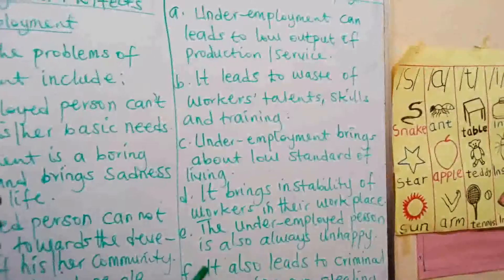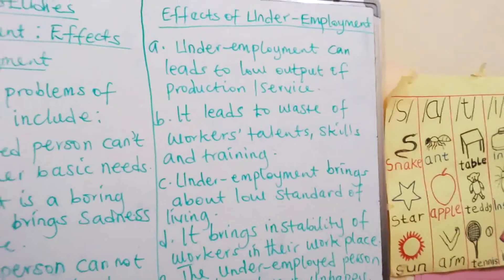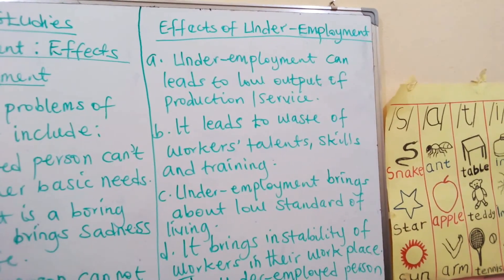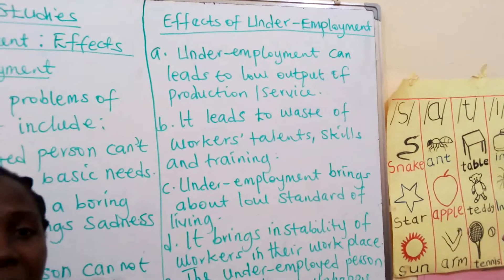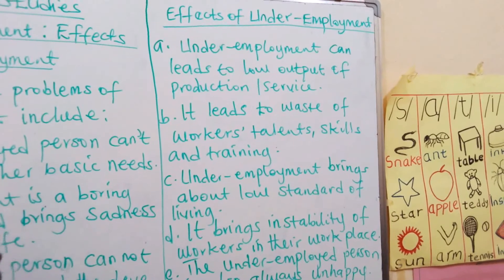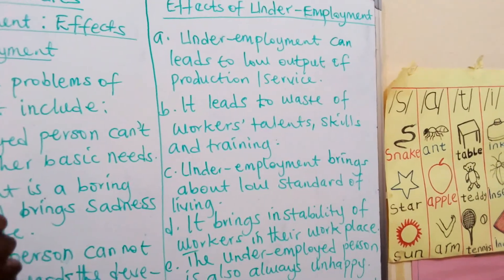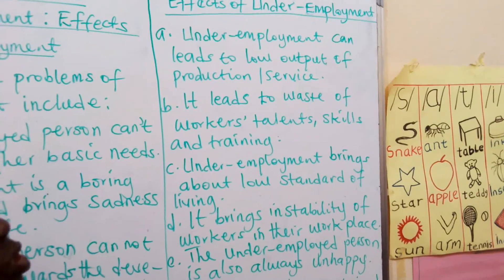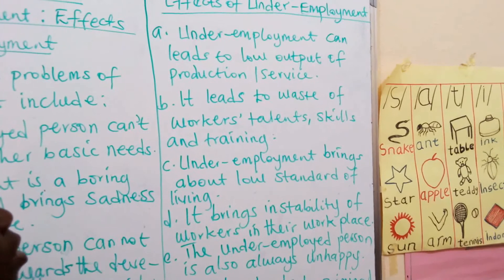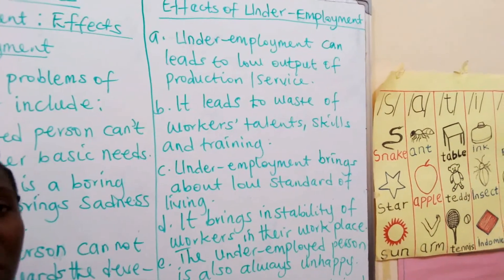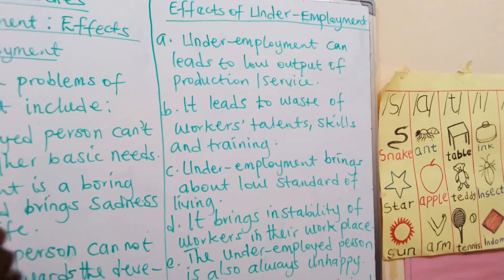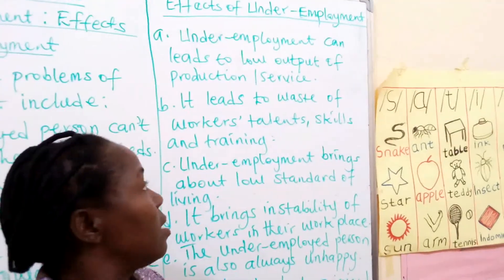We have come to almost the last aspect of our lesson, and this is the effects of underemployment — somebody that is earning insufficient income. One effect is that it will lead to low output of production or services. When a person is employed lower than his or her qualification, the person will not be able to do well, and the production output will be low. It will also lead to waste of workers' talents, skills, and training.